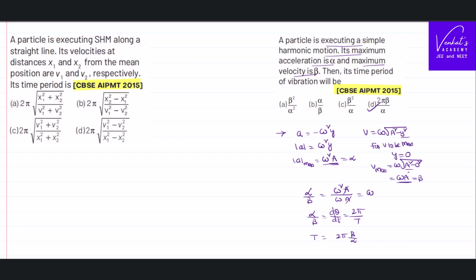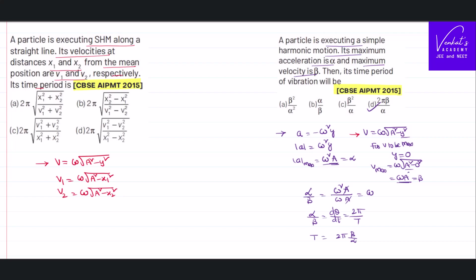Now for question one: a particle executes simple harmonic motion along a straight line. Its velocities at displacements x1 and x2 from the mean position are v1 and v2 respectively. We need to find the time period. This is even simpler — we only need the velocity equation v = ω·√(a² − y²). It is given that velocity is v1 when displacement is x1, and velocity is v2 when displacement is x2.